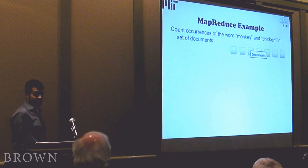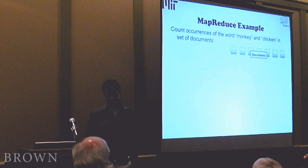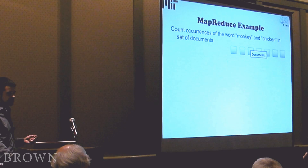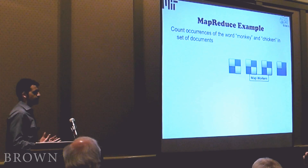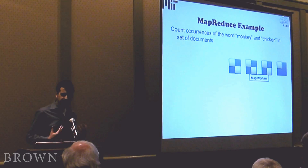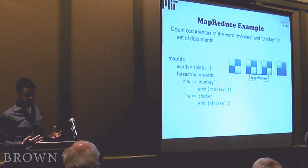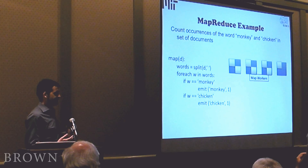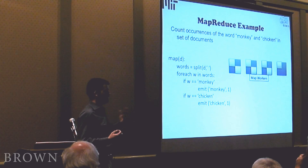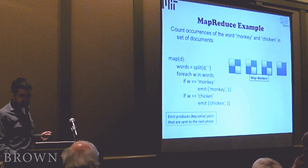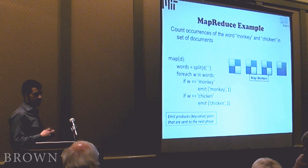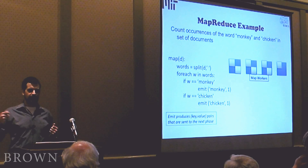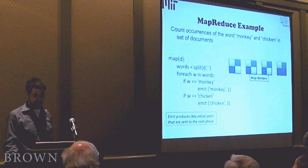Suppose we want to count the number of occurrences of the word 'monkey' or 'chicken' in a collection of documents — represented by green boxes here. In the MapReduce framework you think of these documents as text files. The documents are partitioned across a collection of map workers, and each map worker applies a map task. For counting occurrences of 'monkey' and 'chicken,' the map task simply splits the document into words, checks if each word is 'monkey' or 'chicken,' and if so emits a key-value pair — the key is the word and the value is one. We emit a bunch of ones and then sum them to compute the final count.